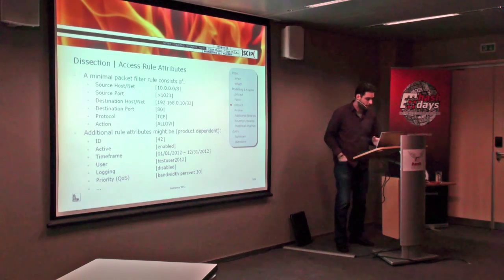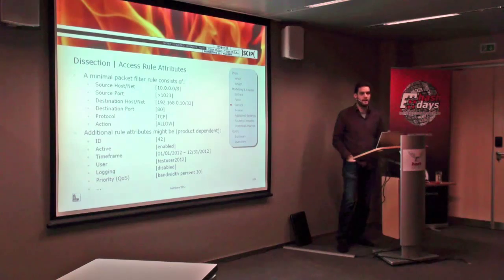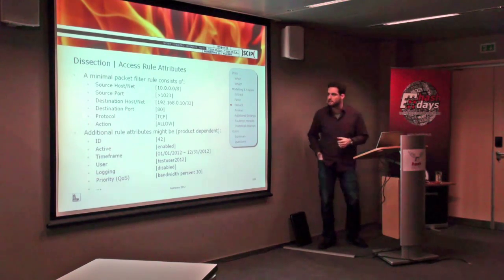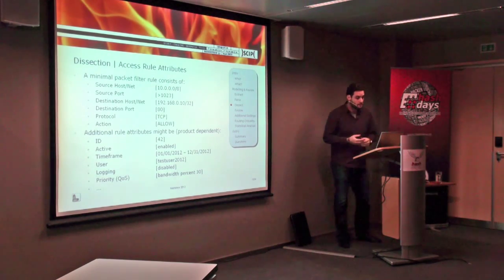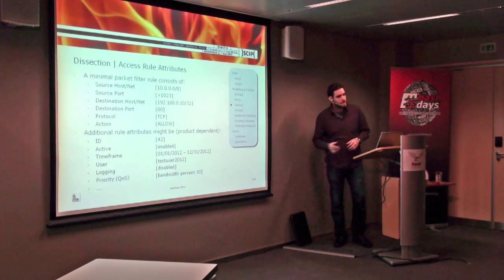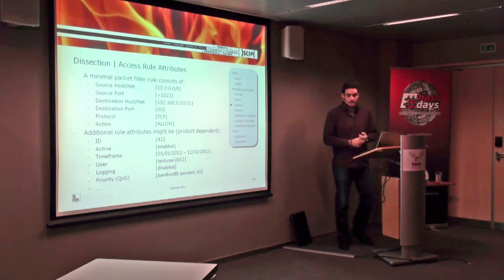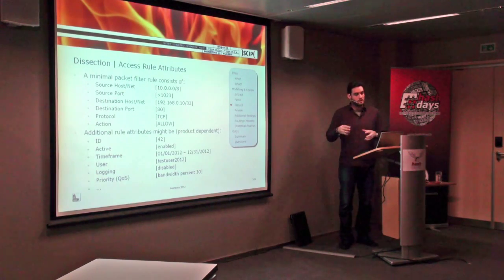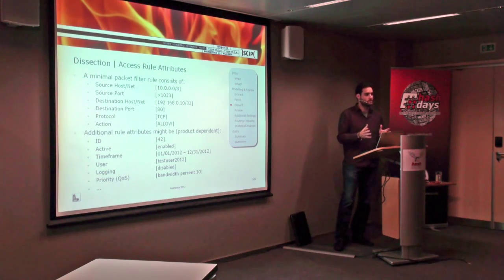The basic attributes of a firewall rule are: source host or net, source port, destination host, destination port, protocol, and action. Some firewalls allow additional attributes, for example you can define time frames, priorities, or quality of service. That's very nice to have if you want to improve security, but firewall rule analysis becomes much more complex when you have these more exotic attributes.